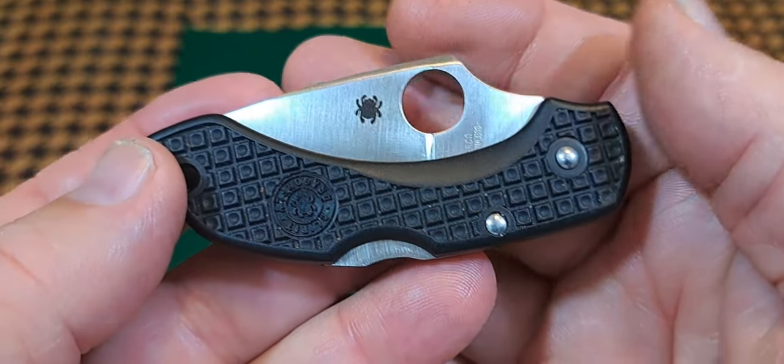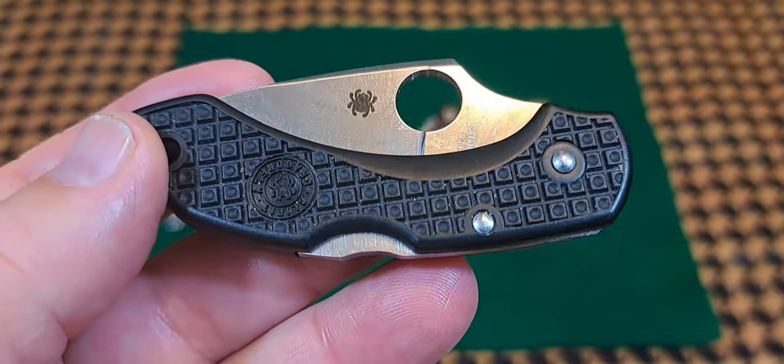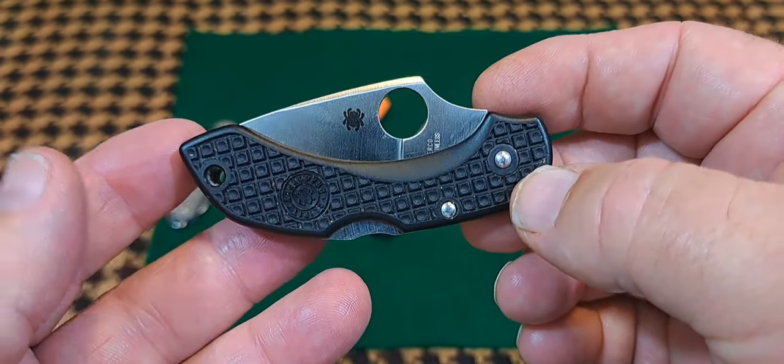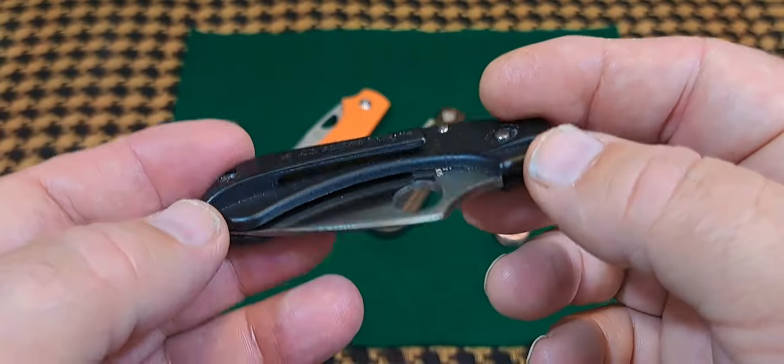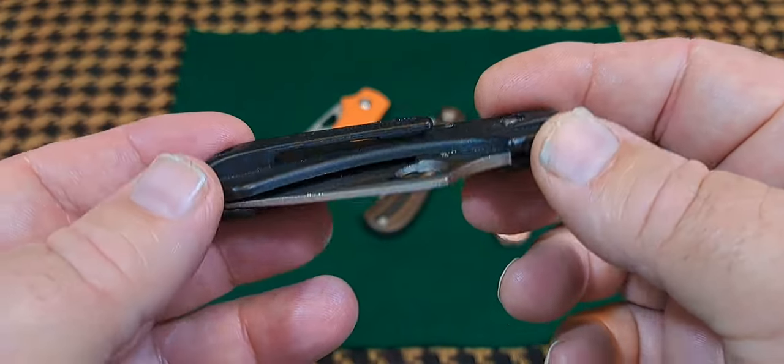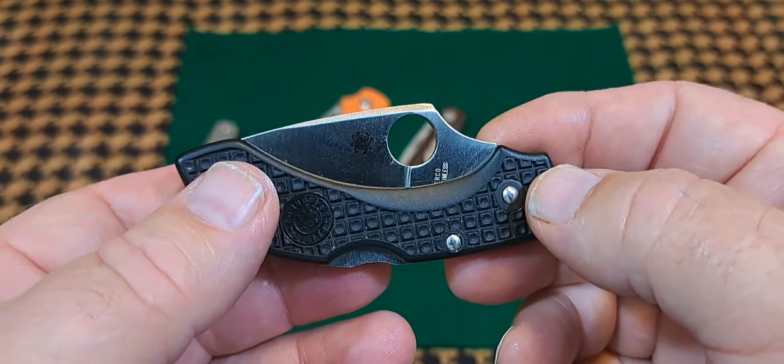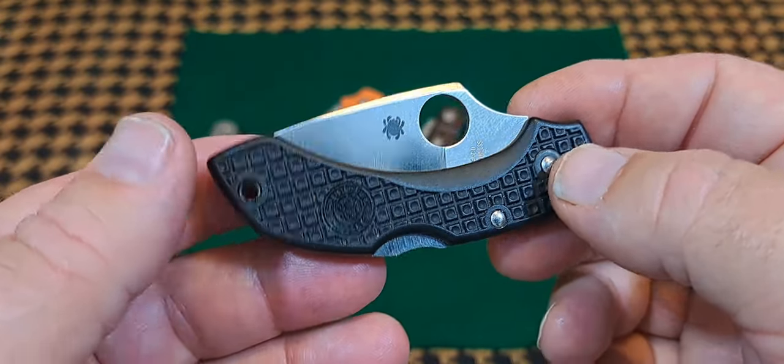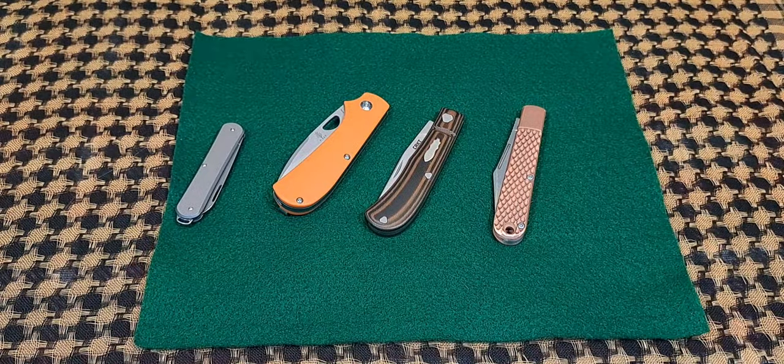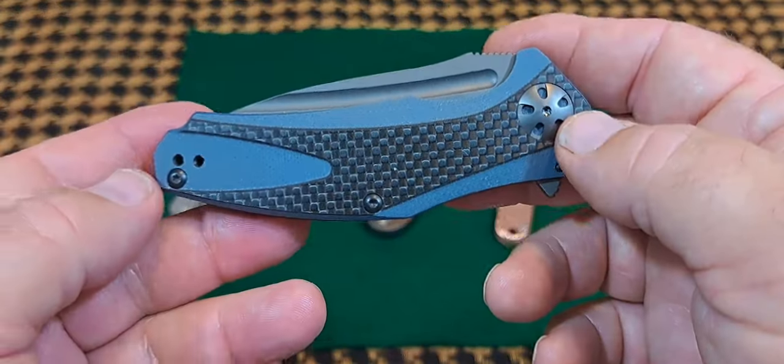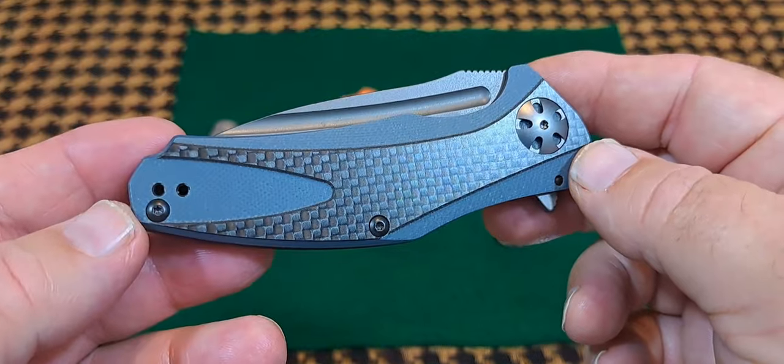They had serrated edges and pocket clips, and this was revolutionary at the time. The first Spider Co came out, was called a Worker. This has no name on it, but it's what led to the Delica pocket knife. This is a very small one, produced probably around 1984 to 1986.